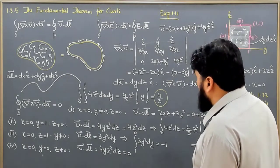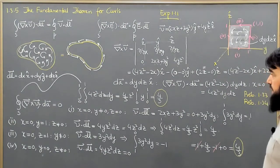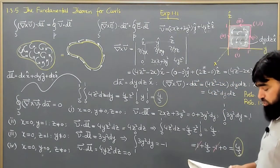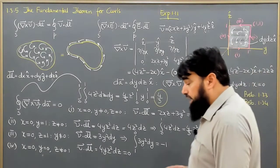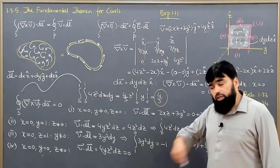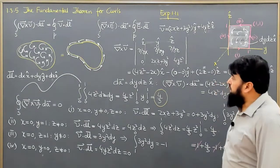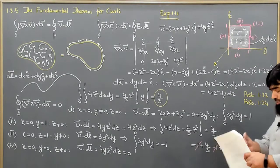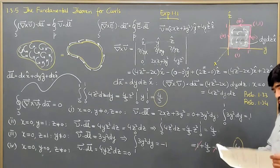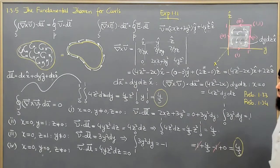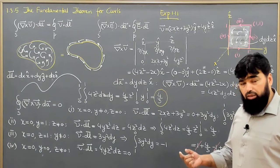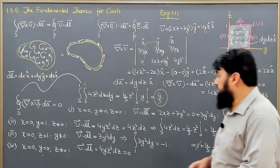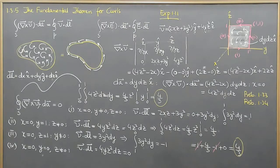With the help of Stokes' theorem, along with Green's theorem and the divergence theorem, we will prove some Maxwell equations. These theorems are helpful in converting between the differential and integral forms of Maxwell's equations. In the next lecture we will go to the curvilinear coordinate systems, covering the Cartesian, plane polar, spherical polar, and cylindrical polar coordinate systems. Stay tuned for those lectures. Thank you.